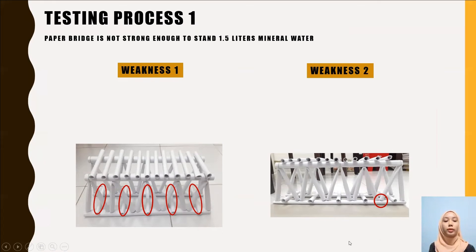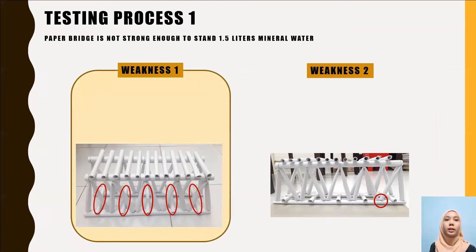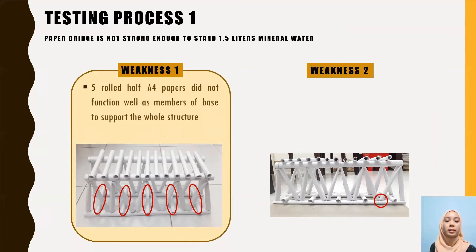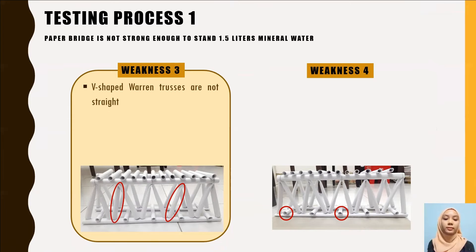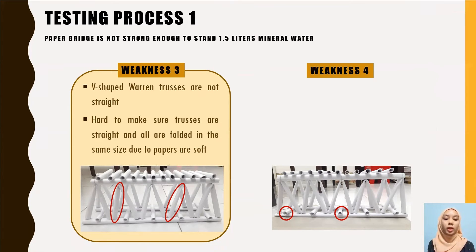Now we move to structural analysis, Testing Process 1. We have identified the weaknesses and strengths. The first weakness is that five roller half A4 paper members did not function well to support the wall structure. The second weakness is that members do not connect and attach to each other well — some connections are not glued properly. The third weakness is that the V-shaped Warren trusses are not straight, as it is hard to ensure trusses are straight and folded in the same size due to the softness of the paper.